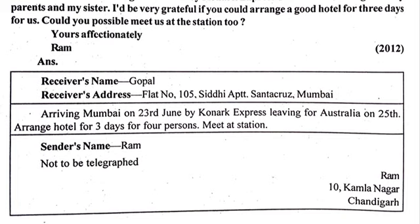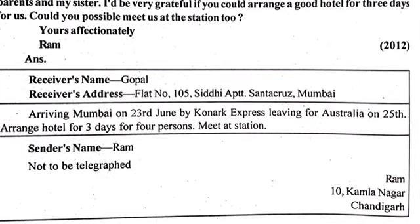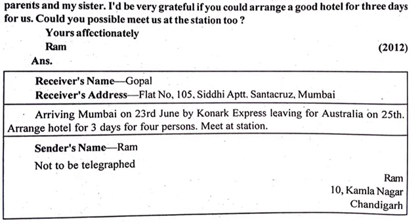Then we will write the telegram message: Arriving Mumbai 23rd June by Konarka Express. Leaving for Australia on 25th. Arrange hotel for three days for four persons. Meet at station.